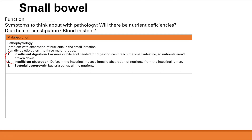We'll focus on insufficient digestion and insufficient absorption. How do these patients present? There will be nutrient deficiencies. There will also be diarrhea and steatorrhea — greasy stools. If you're not absorbing, you have extra nutrients in the lumen causing hyperosmolarity, which draws in extra water. If fat isn't digested, you get steatorrhea. You can also have flatulence, bloating, and various GI symptoms.